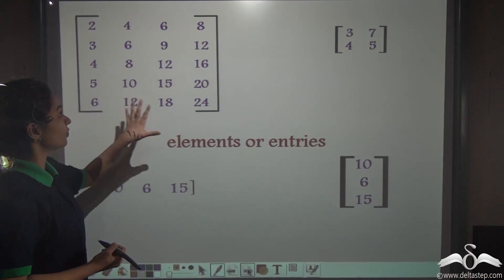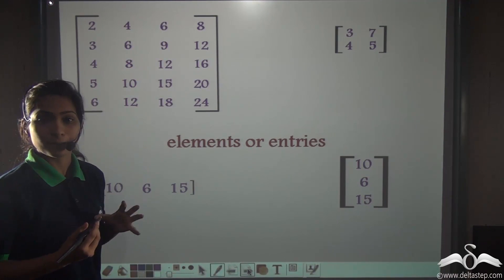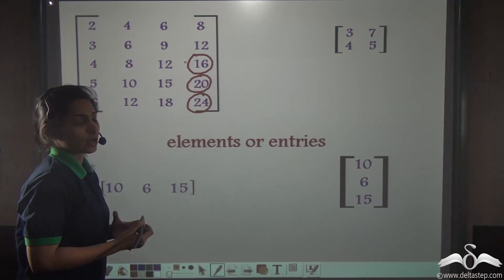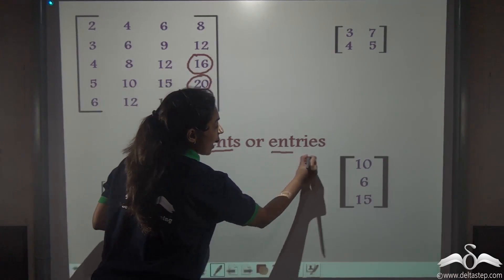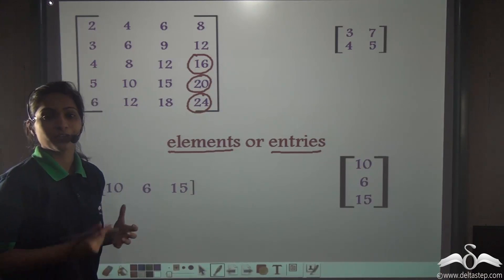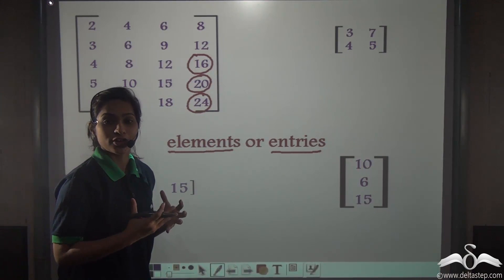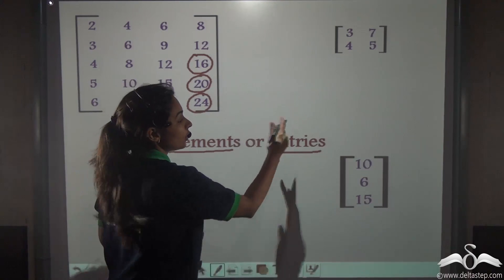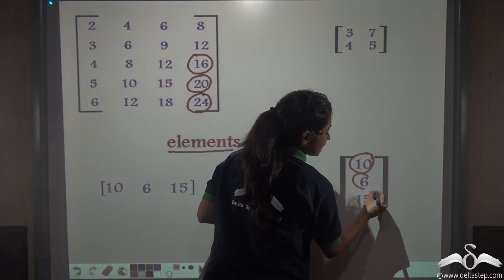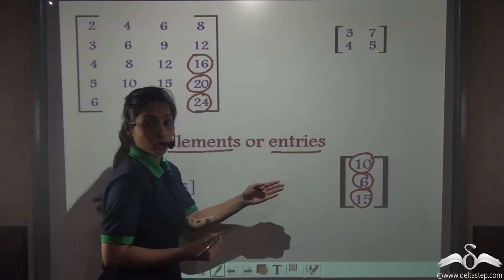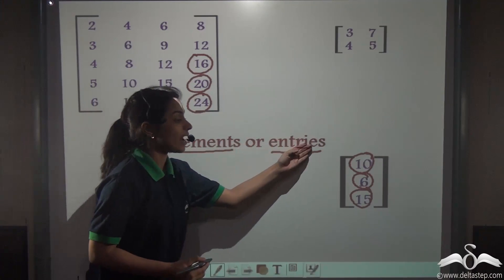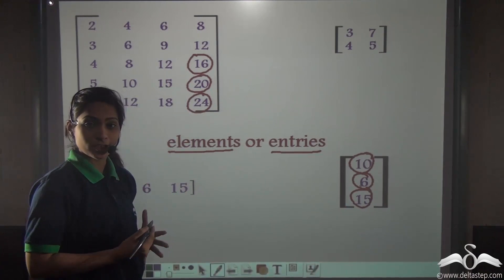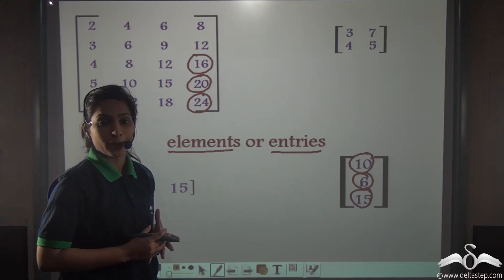Now, the data which we write inside a matrix — the numbers or any such data we are writing inside it — all these are known as elements or entries. We were writing the cost of apples, oranges, melons, and even how many apples Rekha and Swati bought. All these will be known as elements or entries inside the matrix. Whatever we write inside the matrix will be known as an entry of the matrix.